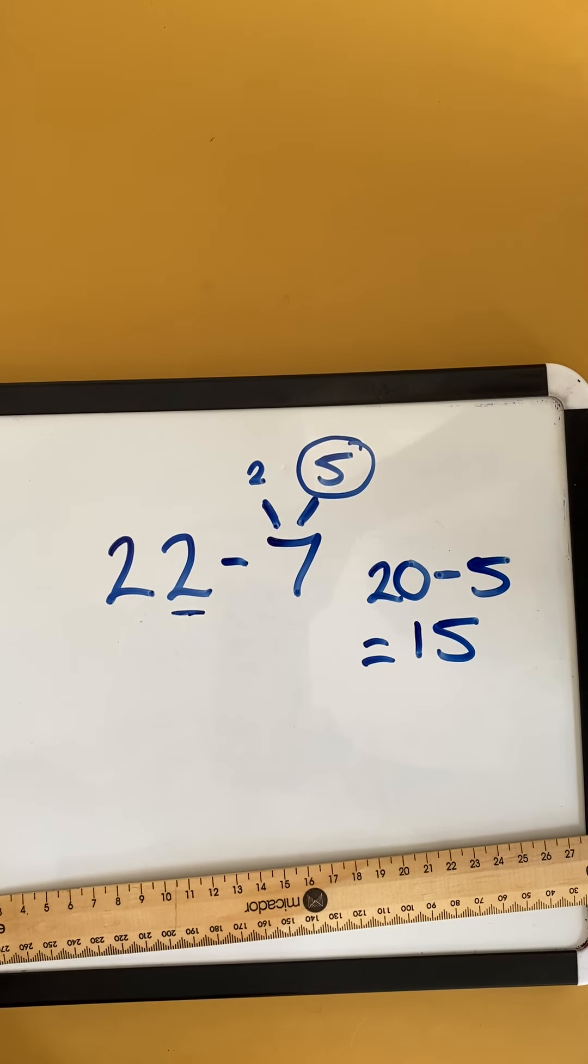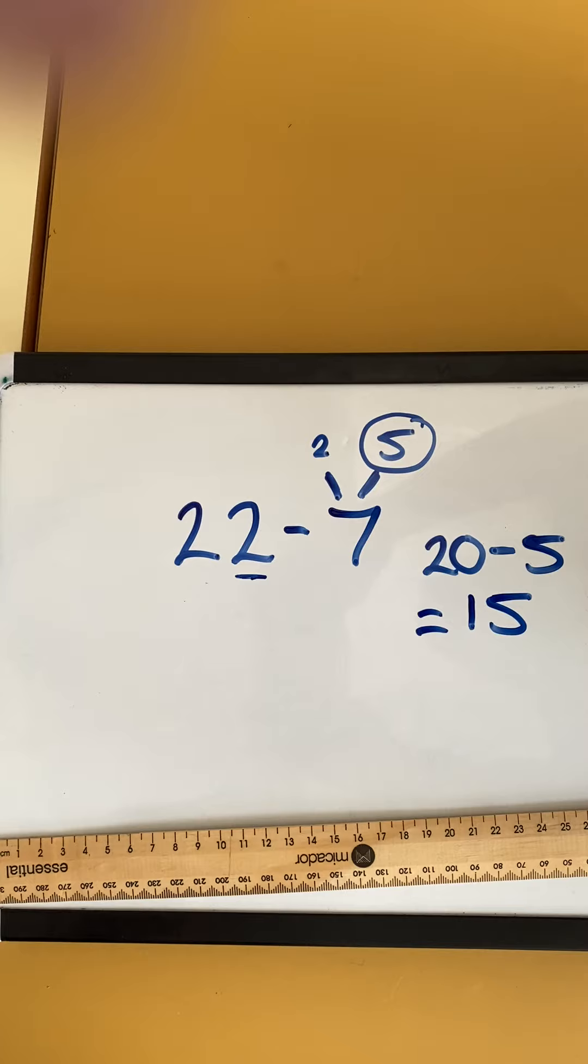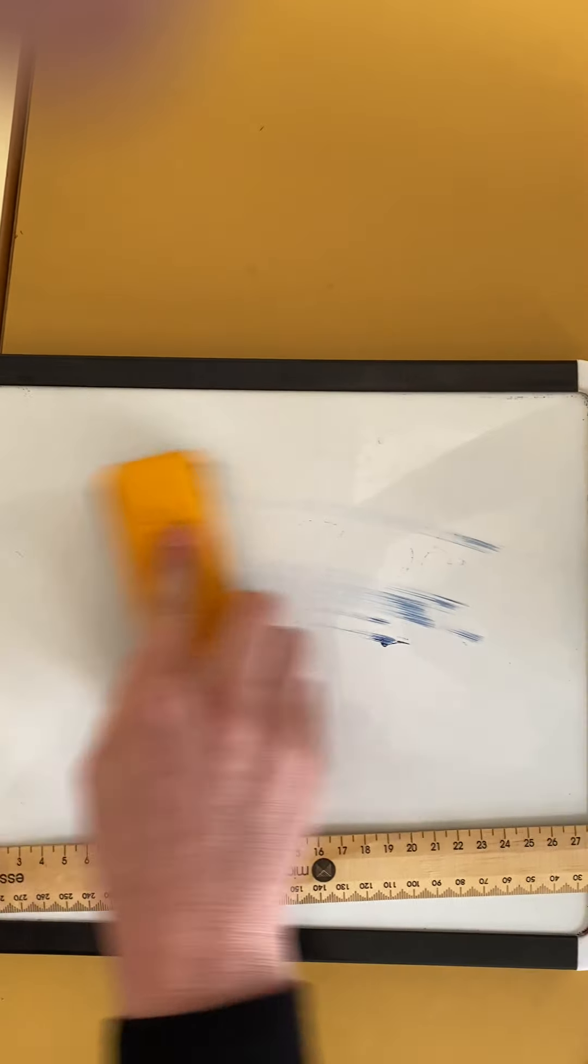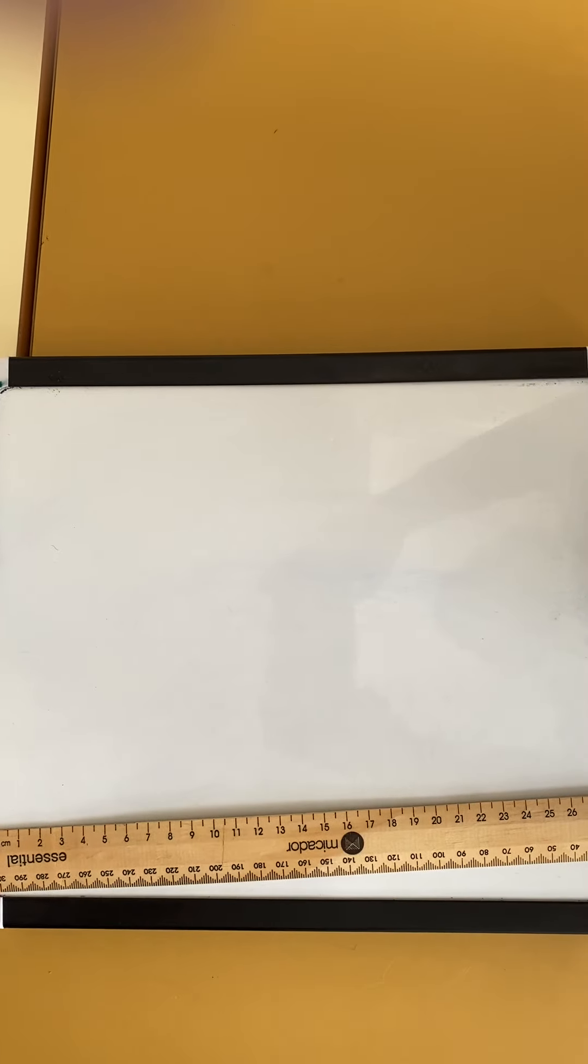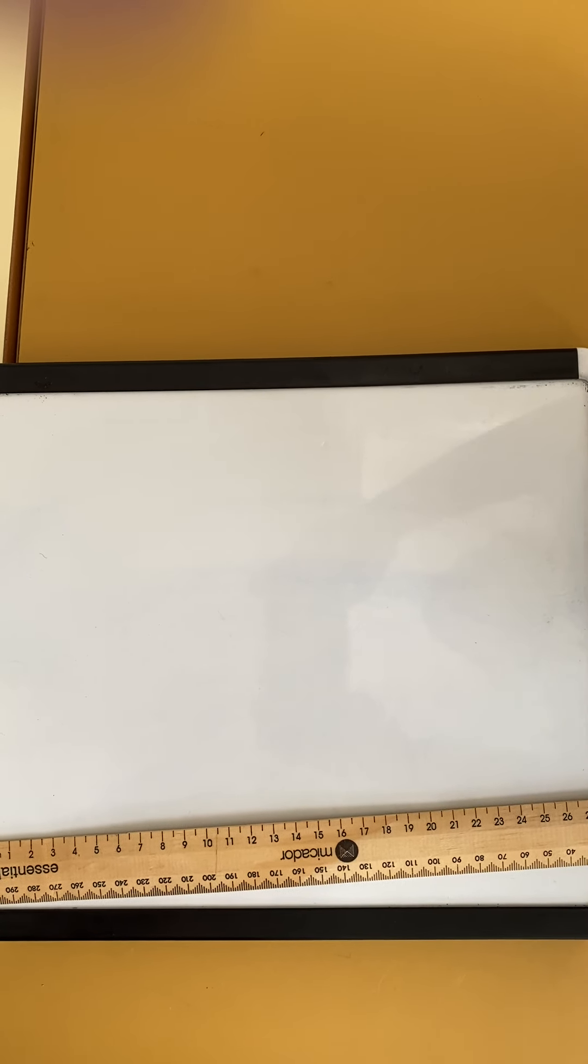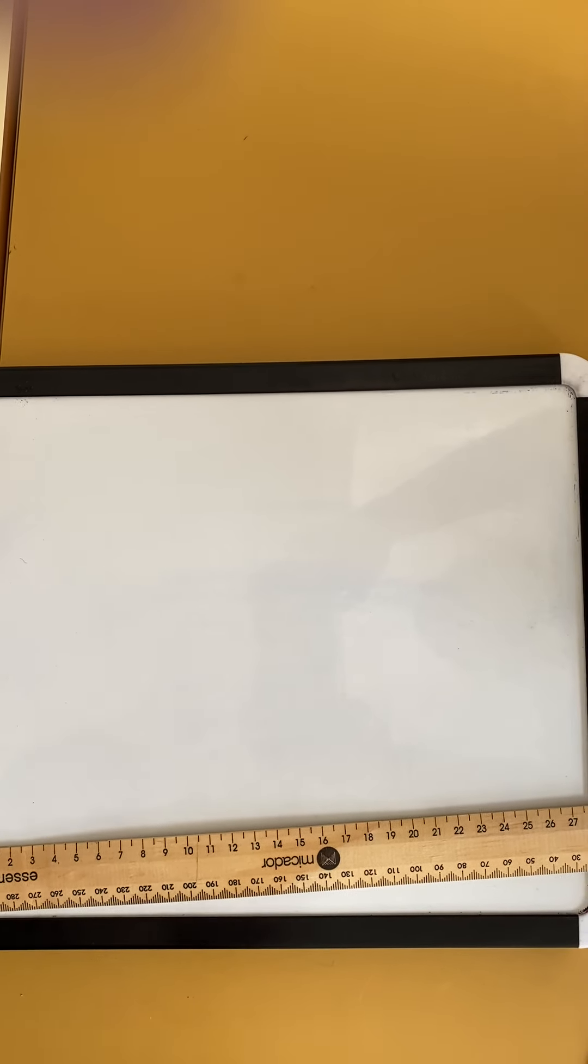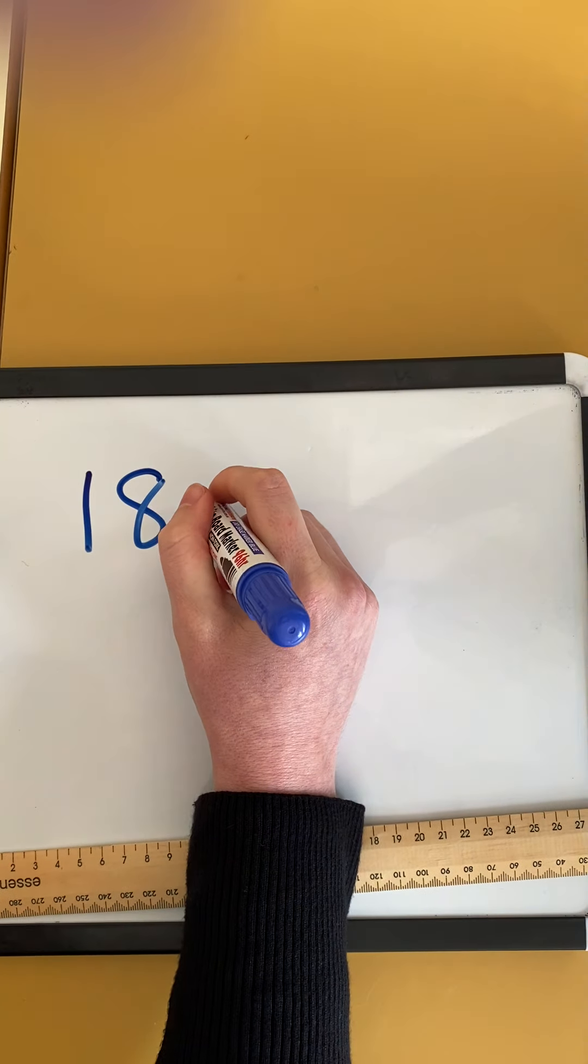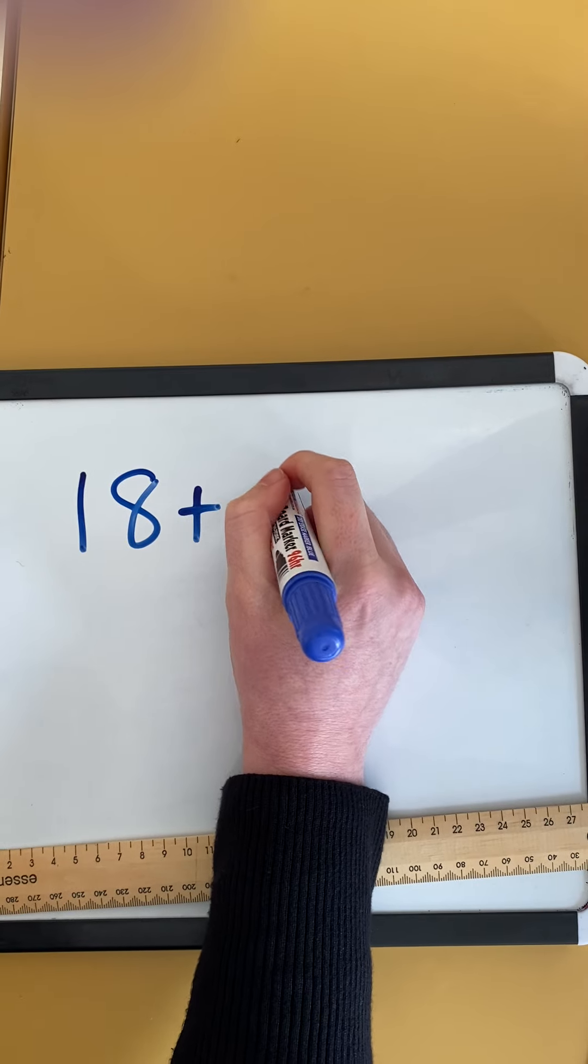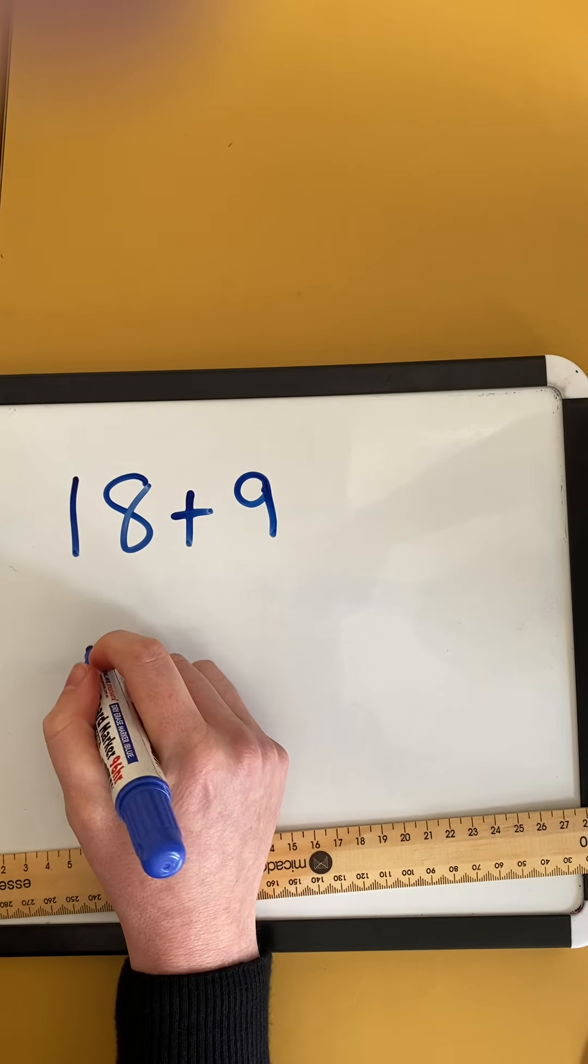So when we're doing our addition and subtraction problems, we really need to think what is the most efficient strategy to use. If we are only adding or taking away a small number, the counting on or counting back strategy would be more efficient. But we could also use the bridging strategy if we're using bigger numbers and we have them close to a 10.